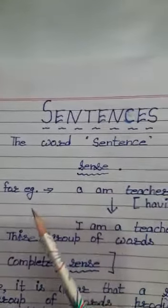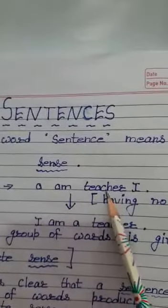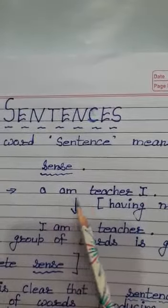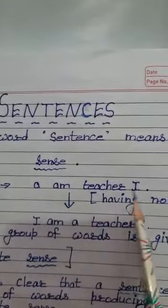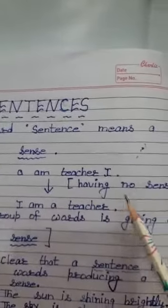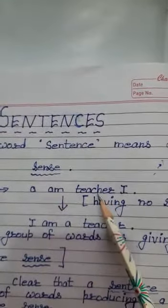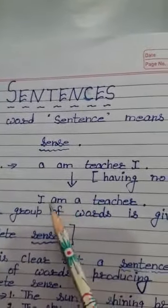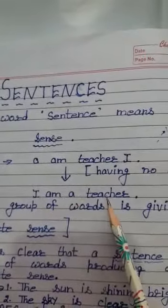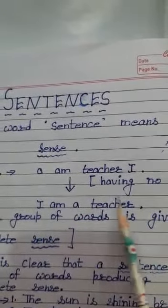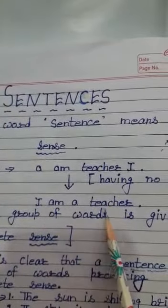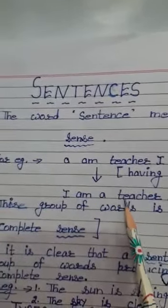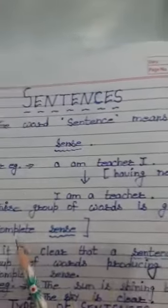So let us elaborate this with the help of an example. If I say 'a am teacher i' — now you are saying that this is a group of words. No doubt, a group of words are here, but are they having any meaning? Are they having any sense? No, they are having no sense. But if I write these group of words in a systematic manner — 'I am a teacher' — now we see that this group of words is giving a complete sense. Main ek teacher hun.